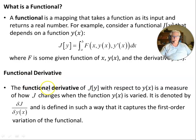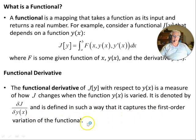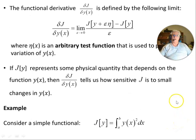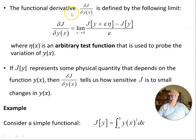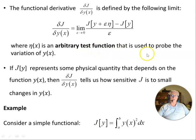Now the functional derivative. The functional derivative of J[y] with respect to y(x) is a measure of how J changes when the function y(x) is varied. It is denoted by δJ/δy(x) and is defined so that it captures the first-order variation of the functional. It is defined by the following limit — just as you might expect with an ordinary derivative: δJ/δy(x) is the limit as ε approaches zero of that object, where ε is a small number and η(x) is an arbitrary test function used to probe the variation of y(x).